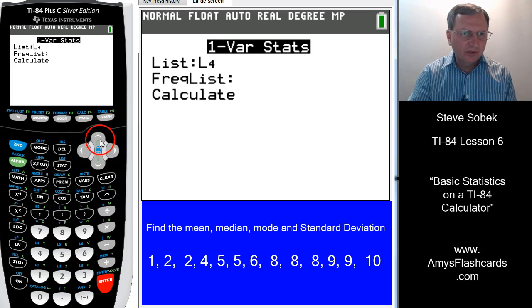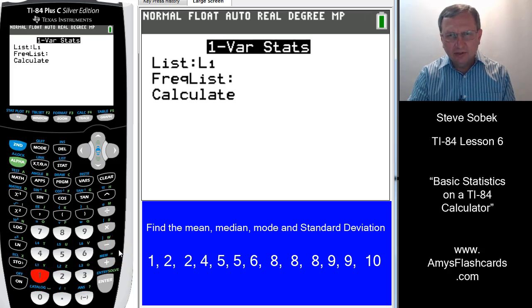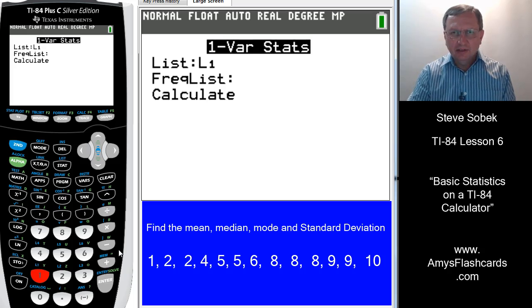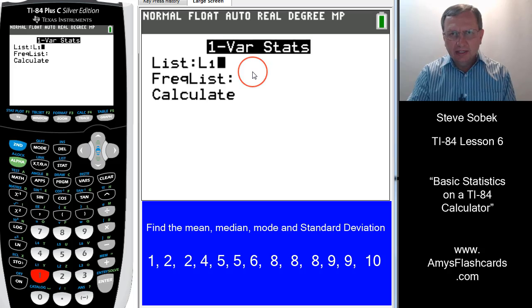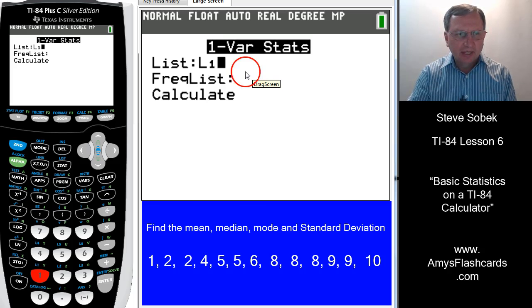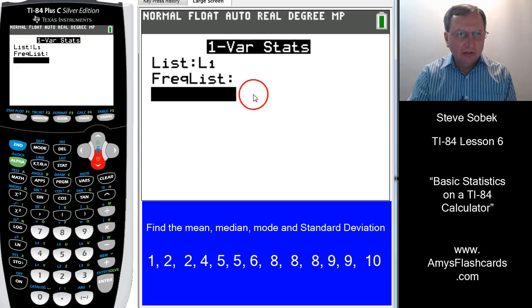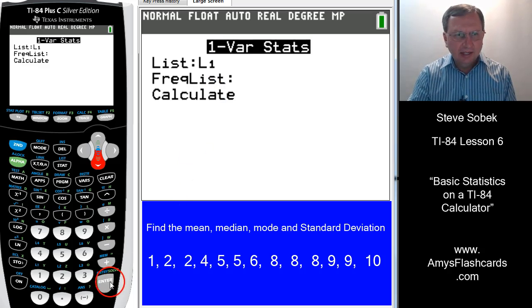List four, notice that there's a blue L4 right above the key four. You would have to hit second L4 to change your list to list four. Now, my data is not in list four, so I'm going to go back up and hit second list one. With the old TI-84 calculators, it'll default to list one. And then we want to highlight the word calculate and hit enter.